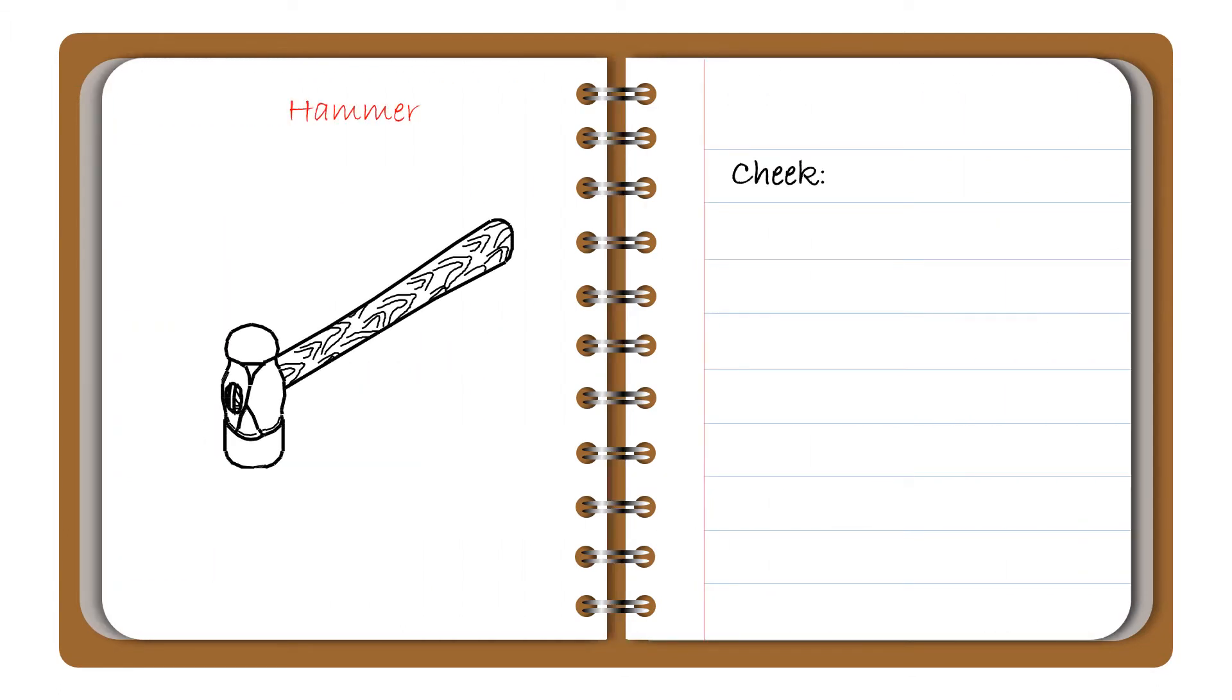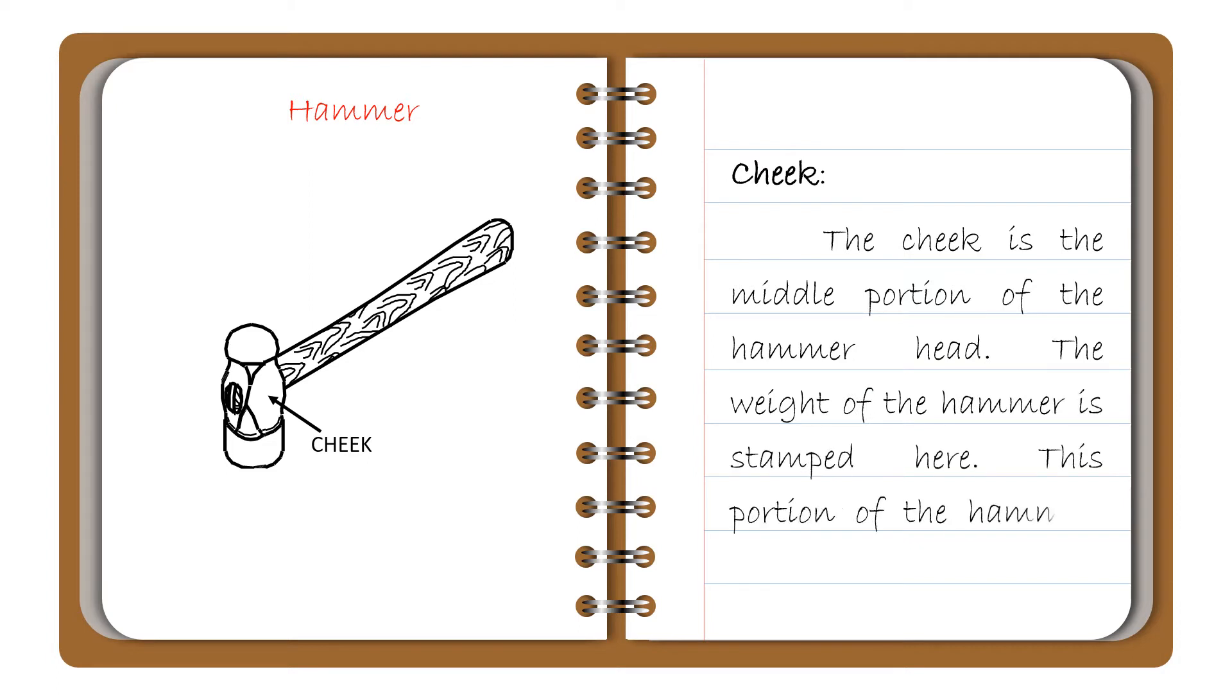The third one is cheek. The cheek is the middle portion of the hammerhead. The weight of the hammer is stamped here. This portion of the hammerhead is left soft.